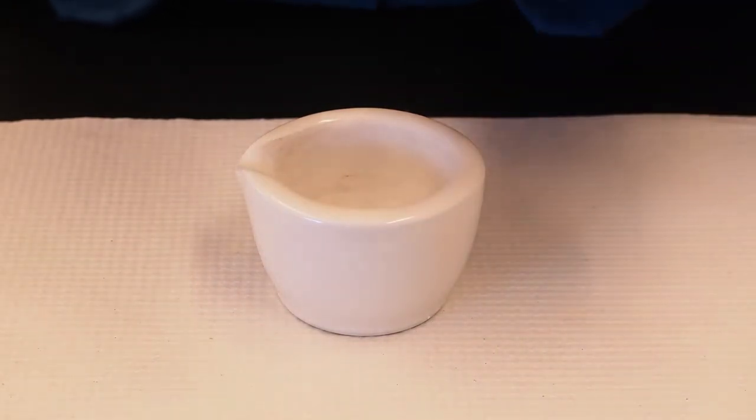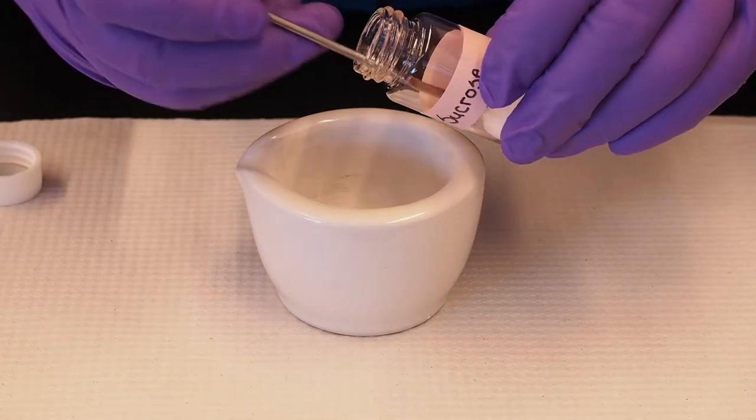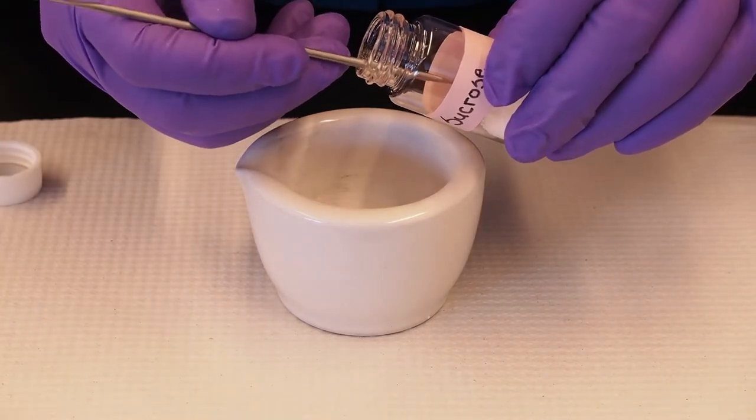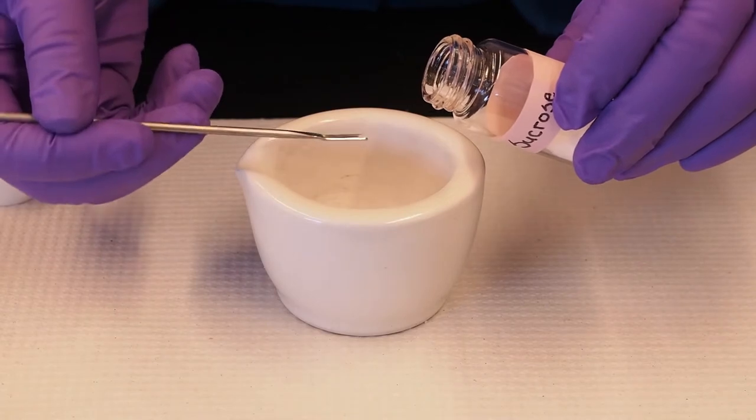Following this, use the small end of the spatula to add a small amount of your sample to the mortar. You should aim for a ratio of approximately 100 to 1 of KBR to sample.